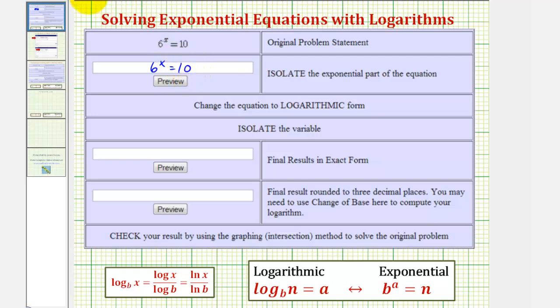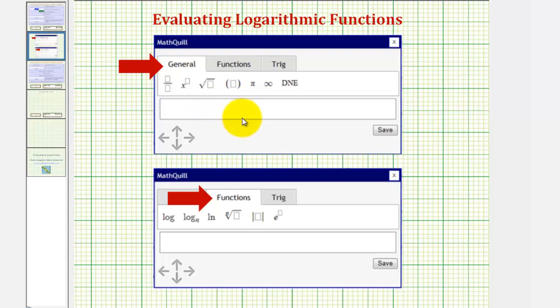We can enter this two ways. Using the keyboard, we would enter 6 and then shift 6 for the caret for the exponent, then x equals 10. Or we can click in the answer cell, click on the small yellow arrow, and use this math palette using this option here, entering the equation and then click save.